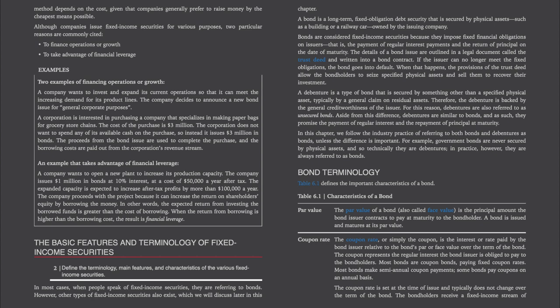Aside from this difference, debentures are similar to bonds — they promise the payment of regular interest and the repayment of principal at maturity. In this chapter, we follow the industry practice of referring to both bonds and debentures as bonds, unless the difference is important. For example, government bonds are never secured by physical assets, and so technically they are debentures. In practice, however, they are always referred to as bonds.